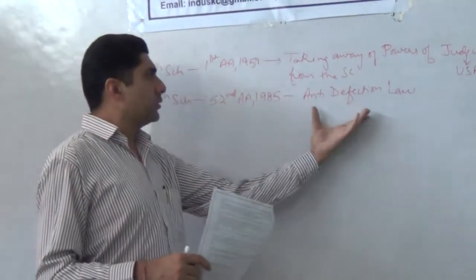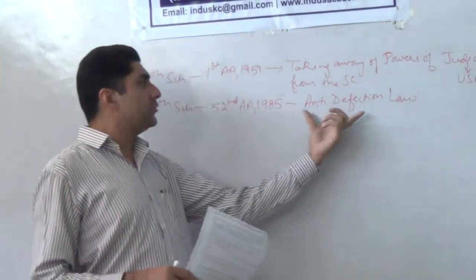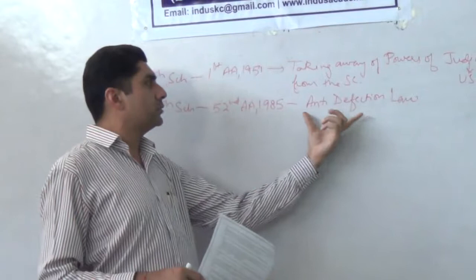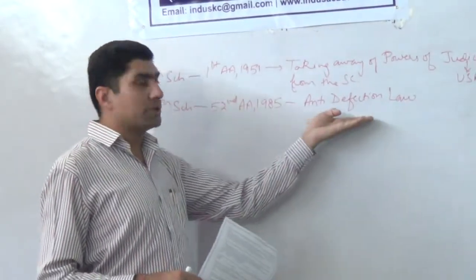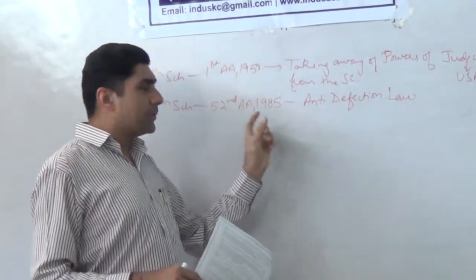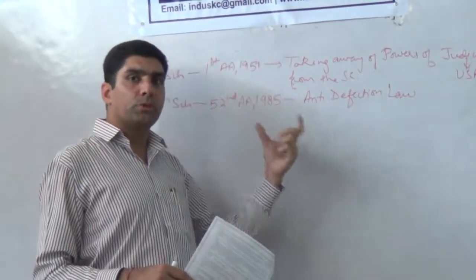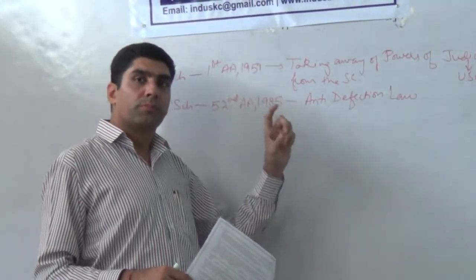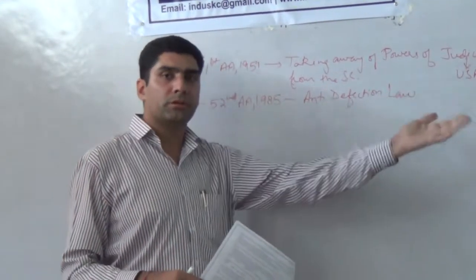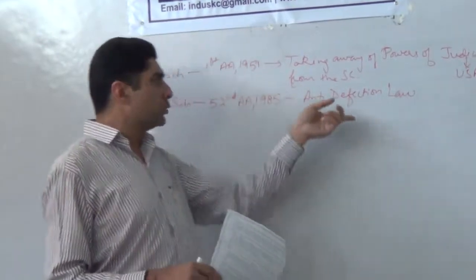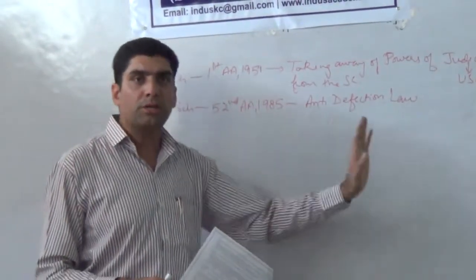This is all about anti-defection law. Anti-defection law mein kya hota hai? Kya ismein kuch exceptions hain? Agar ek particular percentage, puri ki puri percentage belonging to the same political party, wo toot kar dusri party ki taraf chali jaati hai, to wo anti-defection law applicable nahi hai.